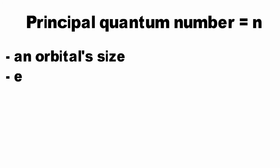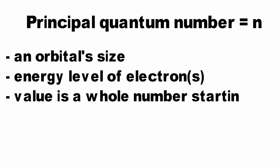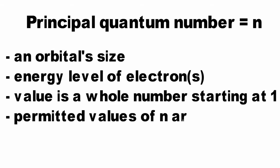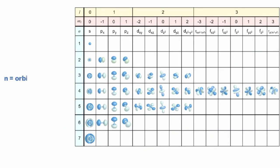The principal quantum number, n, describes an orbital's size and the energy level of the electron in the orbital. It's a whole number starting at 1. Permitted values of n are 1, 2, 3, and so on. An electron's energy and distance from the nucleus increases with increasing value of n, and is commonly known as a shell.